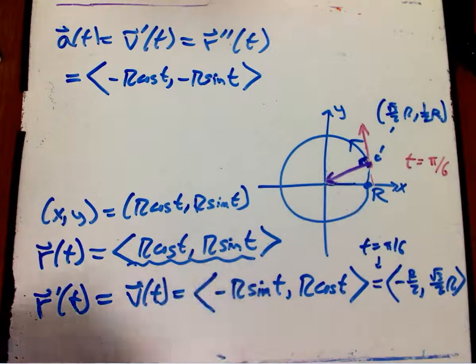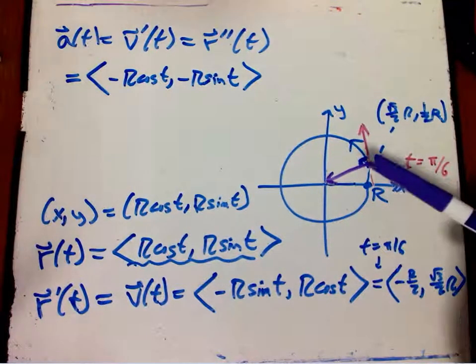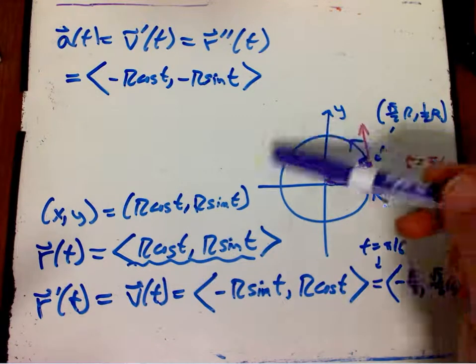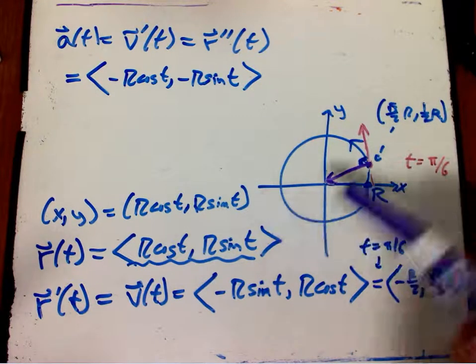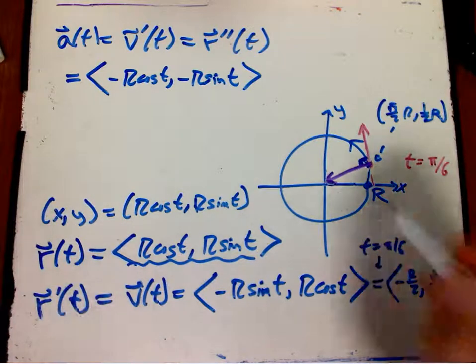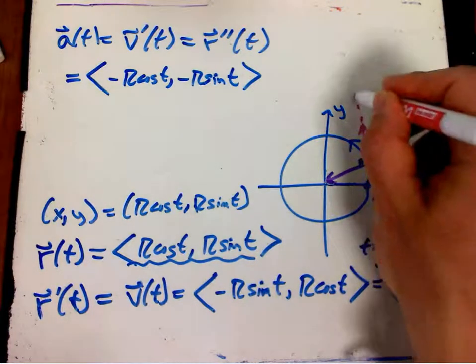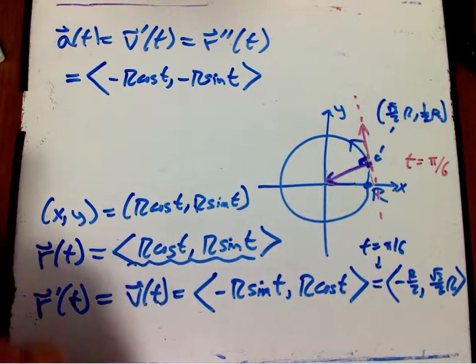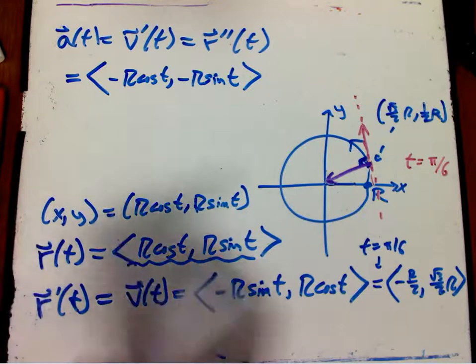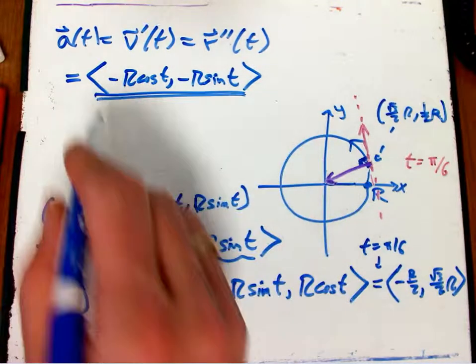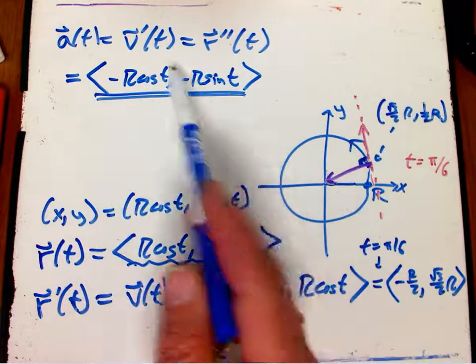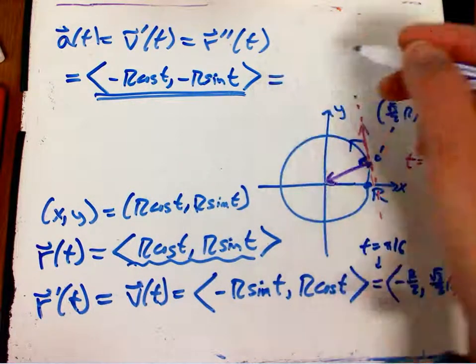You often feel that as if you're trying to go outward. But what is actually happening is that it's pushing you inward in order to keep you in a circle, accelerating you away from what would be your natural motion if you weren't accelerating, which would be the straight line motion we did before.